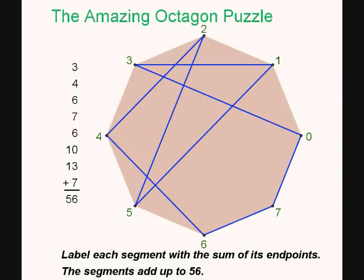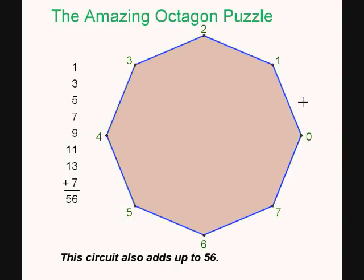Let's look at another circuit. Here's our simplest example of a circuit. All right. The sums are 1, 3, 5, 7, 9, 11, 13, and 7. These numbers also add up to 56. Okay. Do they always add up to 56? Yes, they do.